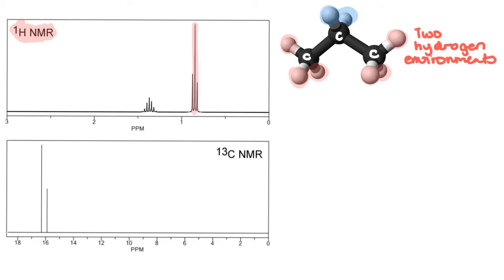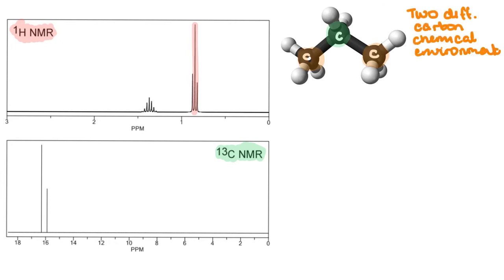This peak is larger because there's a total of six hydrogen environments compared to two. And once again, if we look at the carbon chemical environments, we can see that there are two different types. So you should expect two peaks.